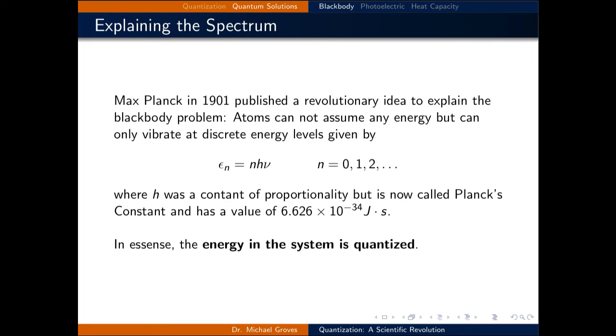And so what we're going to look at is how this was solved. So the solution came from someone named Max Planck, who suggested a revolutionary idea to solve the problem. He suggested that atoms cannot vibrate at any frequency. They can only vibrate at discrete energy levels given by e_n equals n h nu, where n could be any integer value, 0, 1, 2, 3, 4, 5, and on and on. This concept we will revisit again and again, where the energy of the system is an integer multiple of the quantity. In this case, it's the frequency of the system. h is a constant of proportionality, but it's now called Planck's constant, and it has a value of 6.626 times 10 to the minus 34 joule seconds. And in essence, Planck quantized the energy levels of the vibrations of the system.